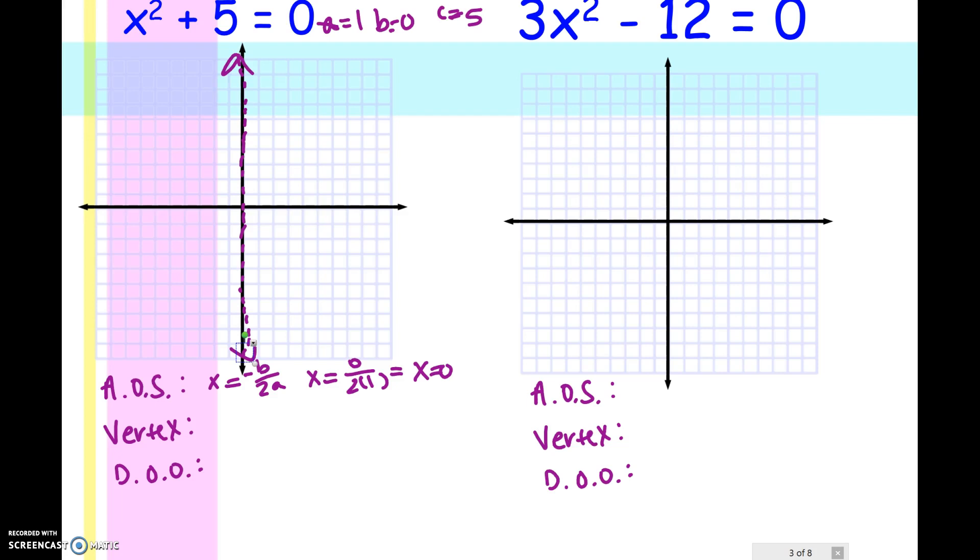And then if we plug that in, you can kind of ignore the 0 when you're plugging in. So I'm going to plug into the x squared plus 5. So 0 squared plus 5 is going to give me 0 plus 5, or just 5. So there is the y of my vertex. So 1, 2, 3, 4, 5, here's my vertex.